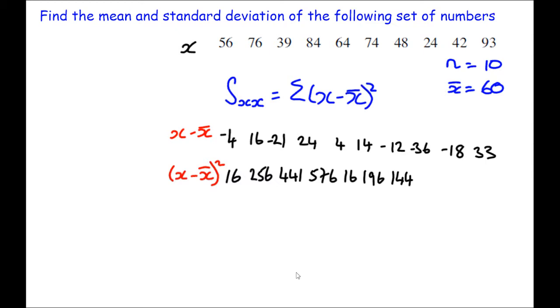36 squared is 1,296. Negative 18 squared is 324.